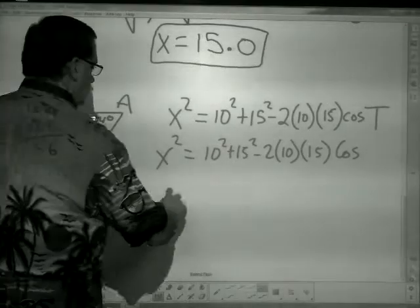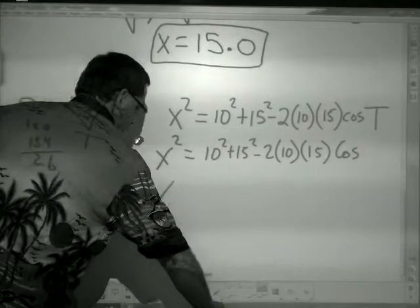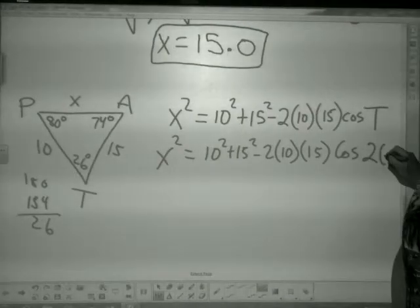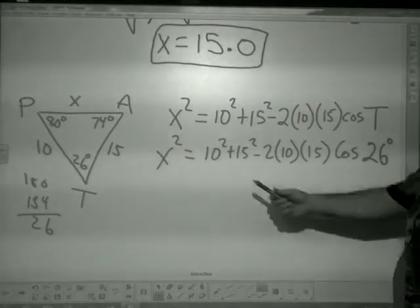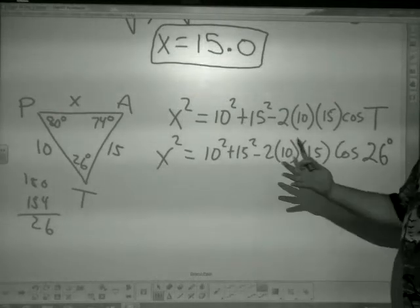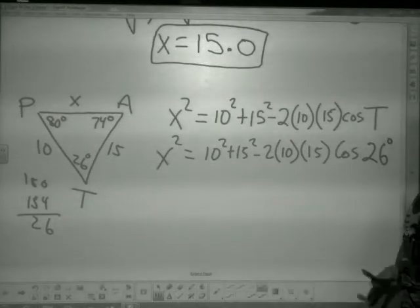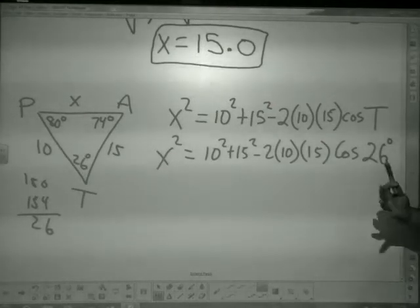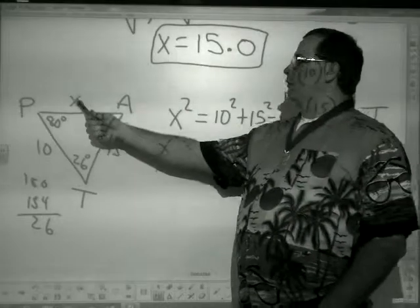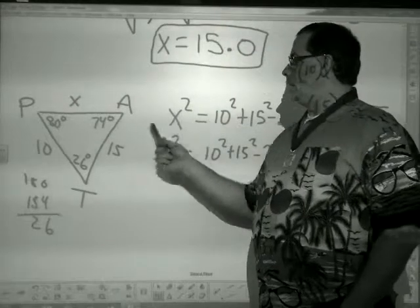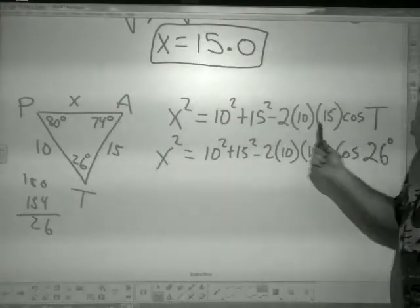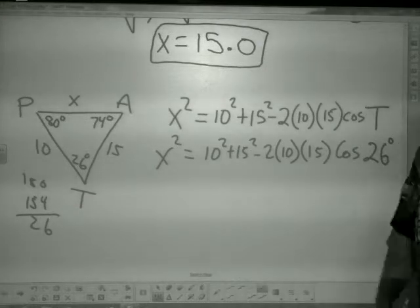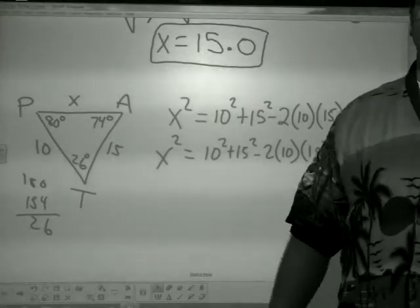So we have x squared equals 10 squared plus 15 squared minus 2 times 10 times 15 times cosine of 26 degrees. Then just type it all in and take the square root to get your answer. Don't get hung up on the letters a, b, c — just focus on what side you're trying to find, what angle is across from it, and put the other two sides in. That is the law of cosines.